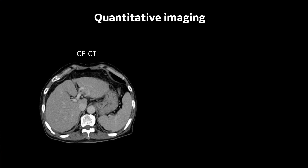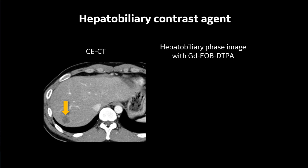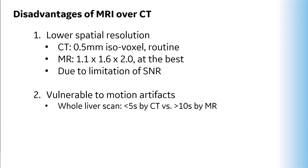MRI enables quantitative imaging. In a cirrhotic patient, we can observe liver fibrosis on CT, but by MRI elastography we can measure liver stiffness at 8.0 kPa — absolutely high even among cirrhotic livers — and anticipate cirrhosis-related complications. Regarding the hepatobiliary contrast agent advantage: in one case, a single metastasis was detected by CT in the right lobe of the liver, but on hepatobiliary phase MRI, another small lesion was clearly detected in the left lobe. So MRI has many advantages like this.